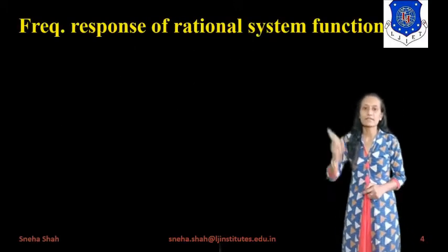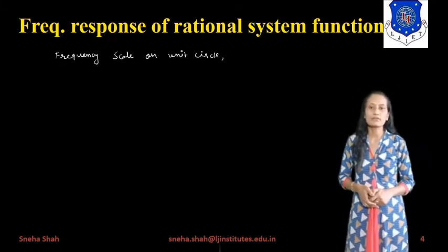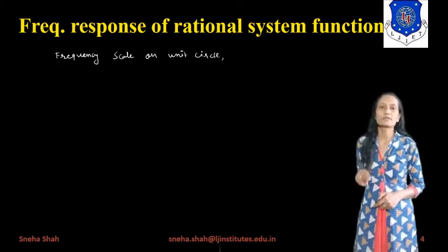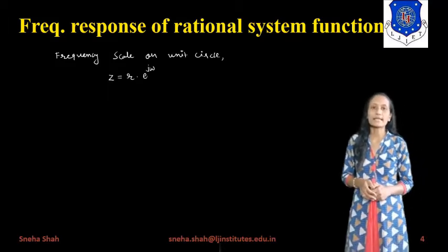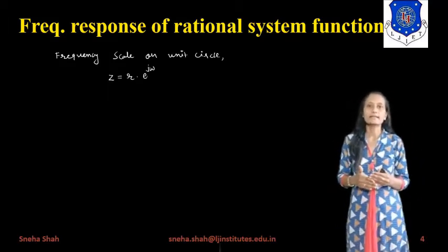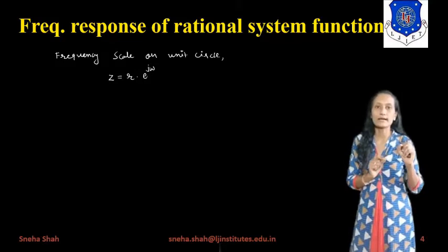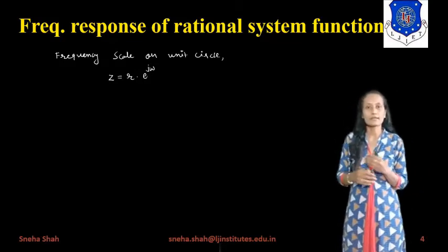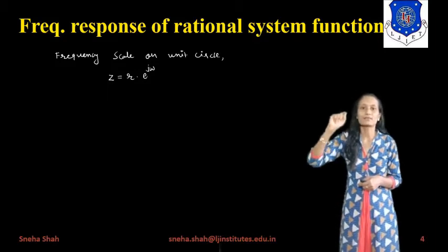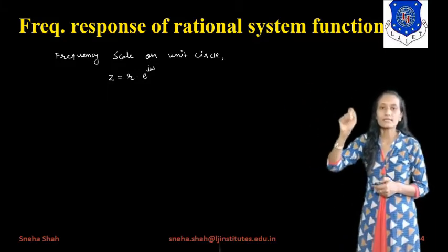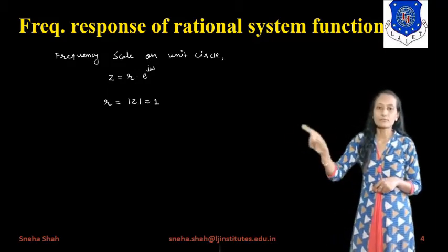The next topic is frequency response of a rational system function. For any rational system, the frequency response is represented on the unit circle. The frequency scale is on the unit circle, so we represent any signal in the form of z-transform, where z = r * e^(j*omega) in polar form. This gives the relation between z-transform and the polar form.